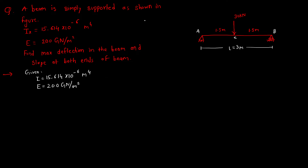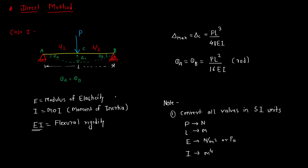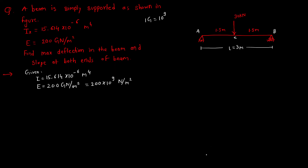Since 1 giga = 10⁹, we can write E = 200 × 10⁹ N/m². We have converted this into SI units. The unit of I is m⁴ and E is N/m².